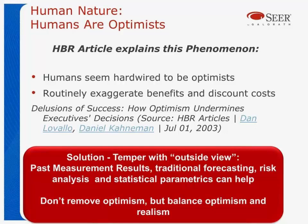There's an article in the Harvard Business Review that discusses some of these issues, going back to the Nobel Prize-winning research of Kahneman and others. What they found was that humans are hardwired to be optimists — no matter what. Most of us are hardwired to be optimists. They hypothesize that perhaps back in the old days, if you tried to kill your food and you missed, you had to go on and do it again. People routinely exaggerate the benefits and discount the costs. This causes problems both on the estimating side and the business case side, where often the costs are underestimated and the return on investment is well overestimated. The solution suggested is to temper by an outside view — provide some kind of past measurement results, forecasting, risk analysis, or statistical parametrics.